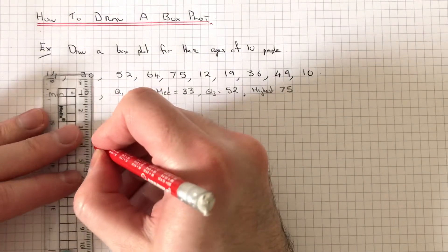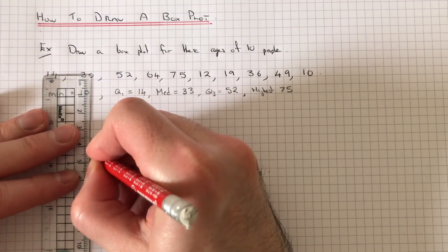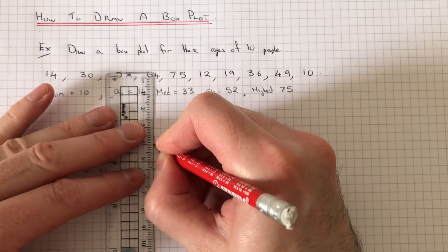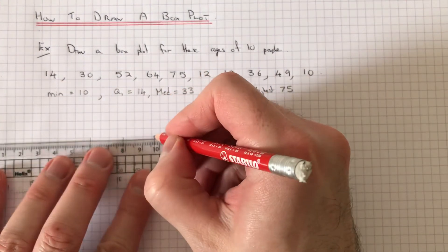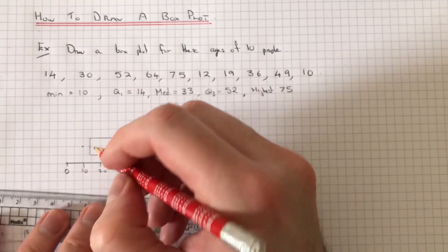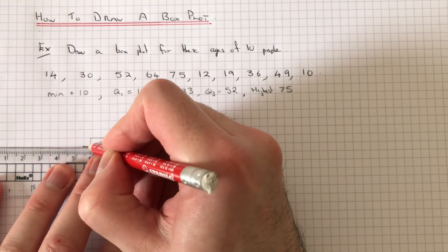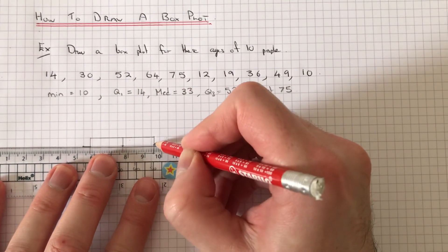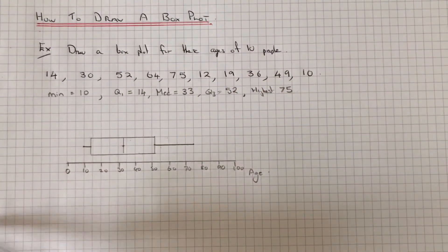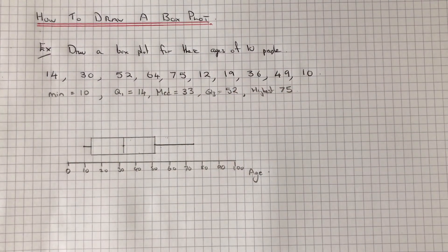So if we turn our middle three values into a rectangle, and then we just need a line connecting the lowest number and the lower quartile and the upper quartile to the highest number. And there you have it. There's your box plot.